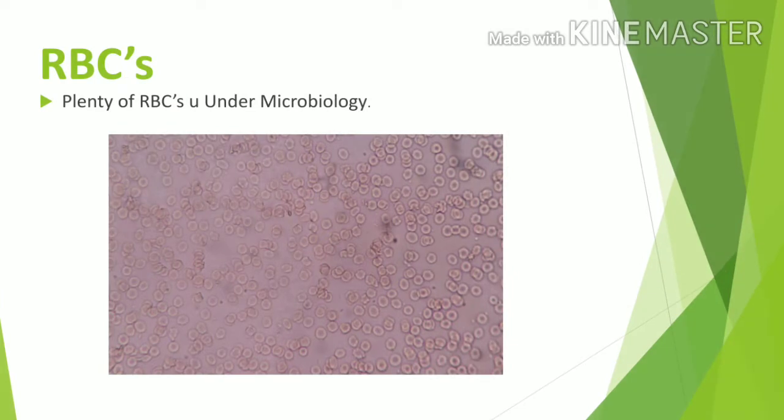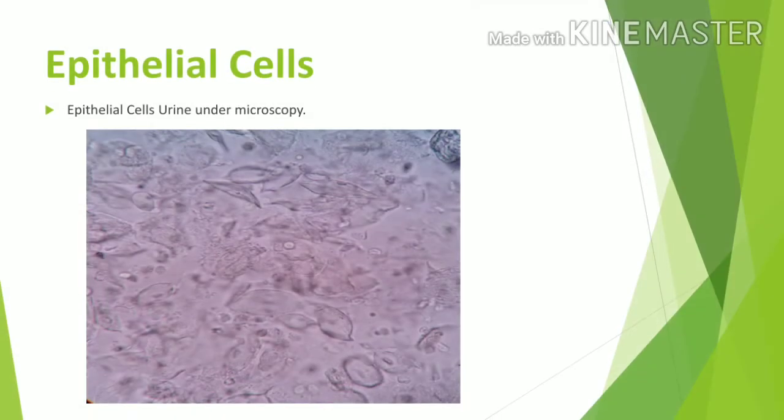Then the next picture — plenty of RBC seen under the urine sediment. Moderate number of epithelial cells seen under the urine sediment in high power field.